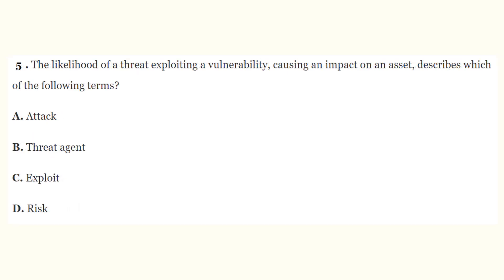Question number five: the likelihood of a threat exploiting a vulnerability causing an impact on an asset describes which of the following terms? A) attack, B) attack, C) threat agent, D) exploit, E) risk. The correct answer is D, risk. The likelihood of a threat exploiting a vulnerability causing an impact to an asset describes exactly what a risk is.